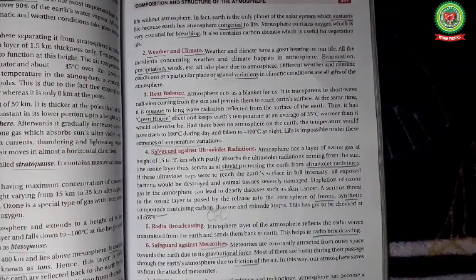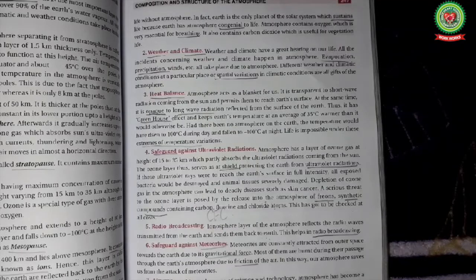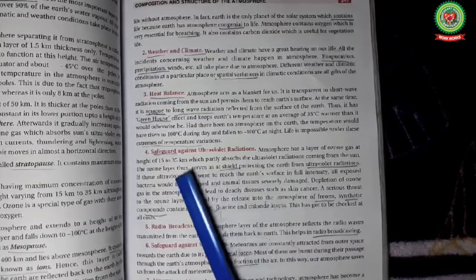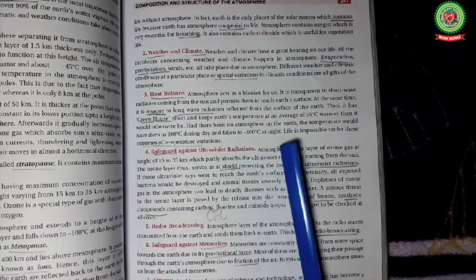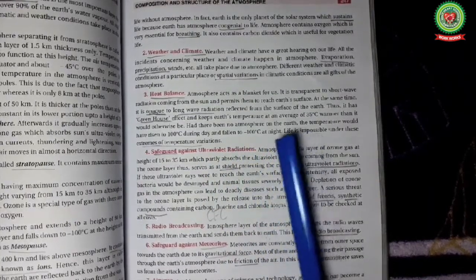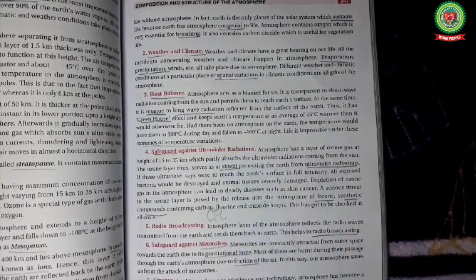Without the atmosphere, the temperature of the earth would have been 100 degree celsius during daytime and minus 100 degree celsius at night. Life would be impossible under such extremes of temperature.